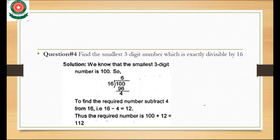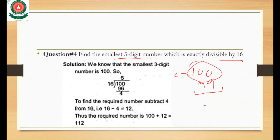Question 4: Find the smallest three-digit number which is exactly divisible by 16. The smallest three-digit number is 100, because going below gives 99, a two-digit number. We divide 100 by 16: 16 times 6 is 96.